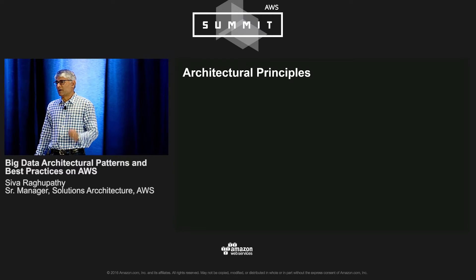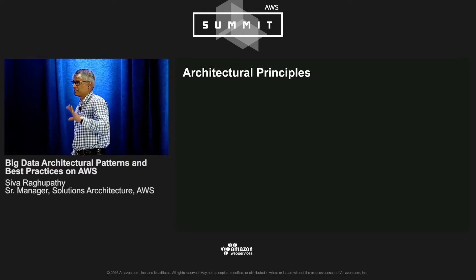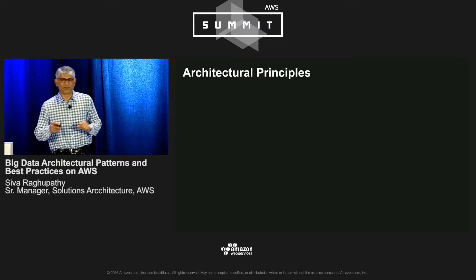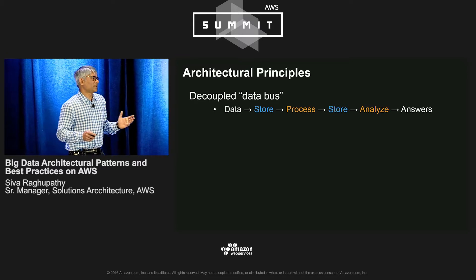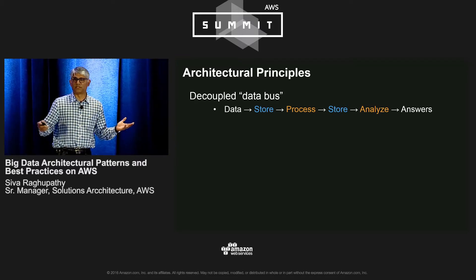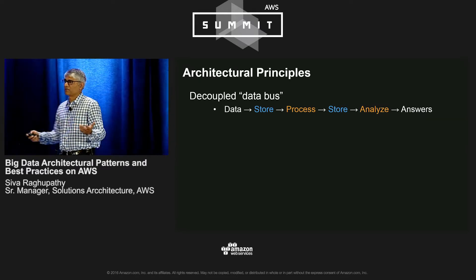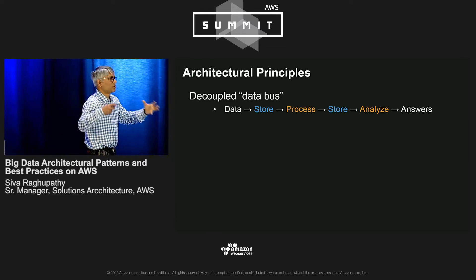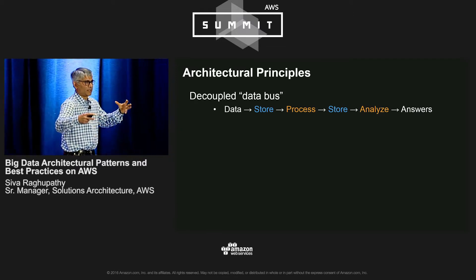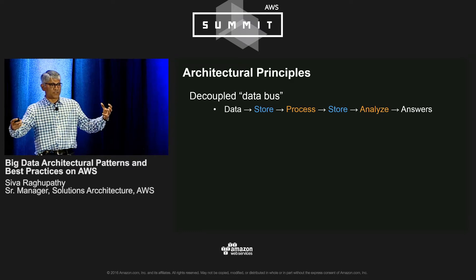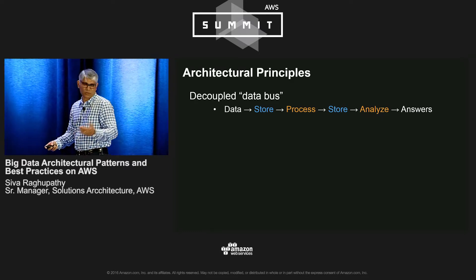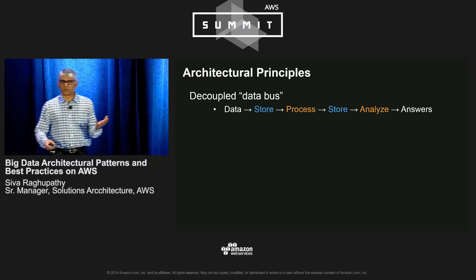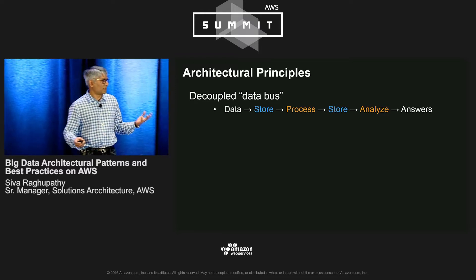Before I get started, I want to introduce five architectural principles that have held the test of time. If there's one takeaway in this presentation, I think this is this slide. First, when you're building big data systems, you should build decoupled systems. As a mechanical engineer, I think of this as a gear or a clutch — nicely decoupled systems allow both the producers and the consumers to go at their own speed. In a big data processing pipeline, it looks like store, process, store, process repeating itself multiple times. The storage subsystem acts as a decoupling mechanism between multiple processing and analysis stages.